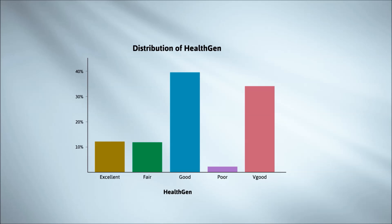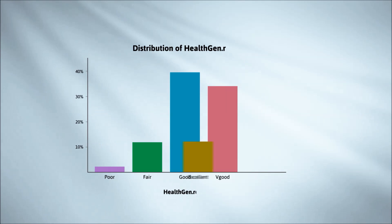There is a natural ordering to the HealthGen categories, and it should be used, as we've done here.